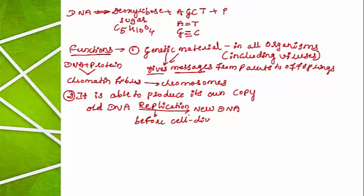The DNA molecule has the ability to produce its own copy, and replication occurs before cell division. When a cell is ready to undergo division, before entering into the division process, the DNA makes its own copies through the process called replication. This is the most important characteristic exhibited by DNA compared with RNA.